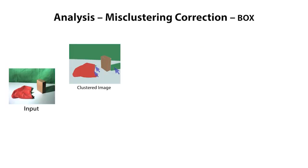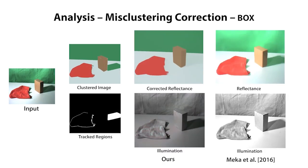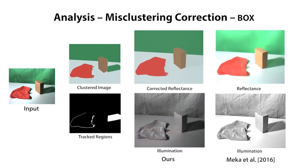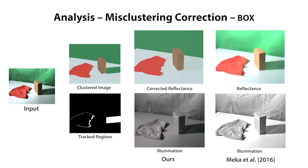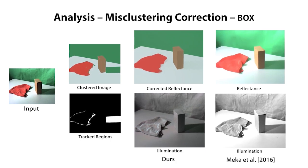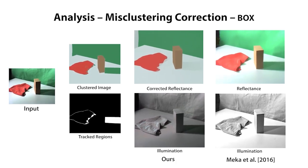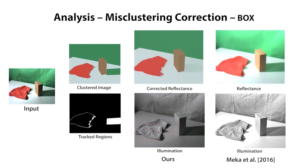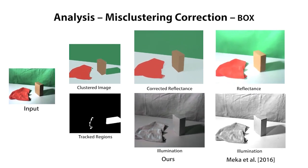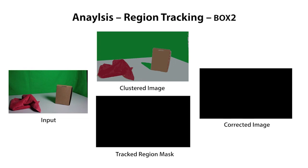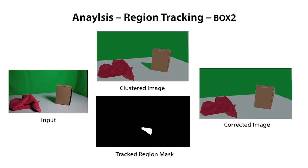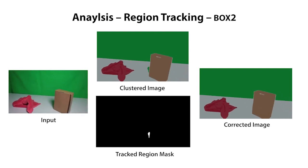Notice the misclustering due to the strong inter-reflections. With three simple mouse clicks the user identifies these regions, for which the underlying reflectance is then automatically computed and the regions are tracked for the rest of the video. Other techniques incorrectly retain the indirect illumination in the reflectance layer. We demonstrate the robustness of our temporal region tracking strategy. The user performs a single click on the misclustered region, which is propagated automatically.